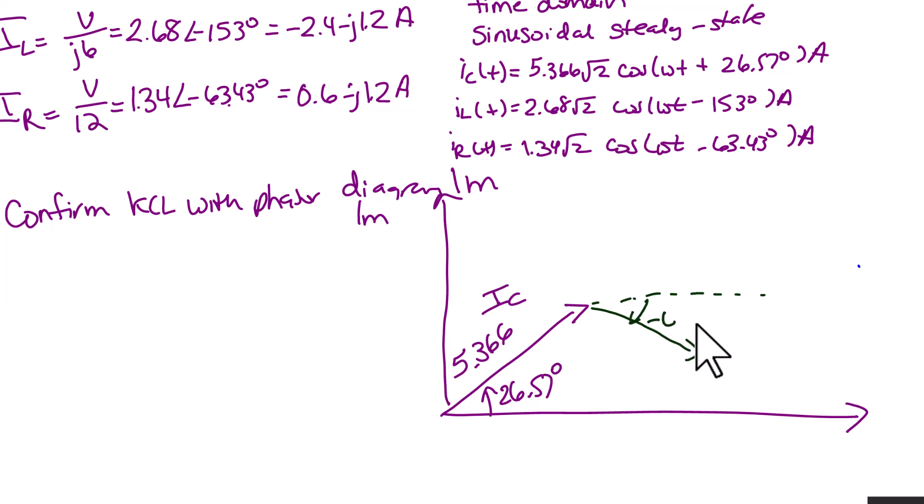And then we're going to sketch the vector IR. IR makes an angle with the horizontal of negative 63.43 degrees and has a length of 1.34.